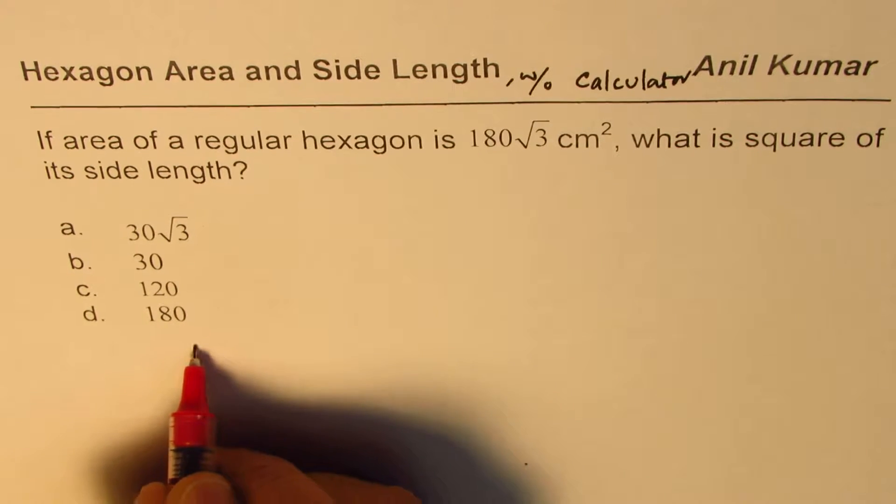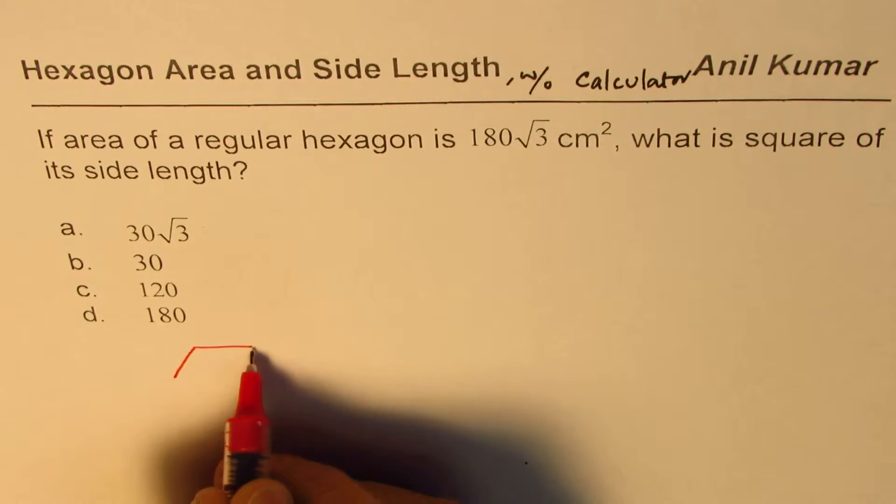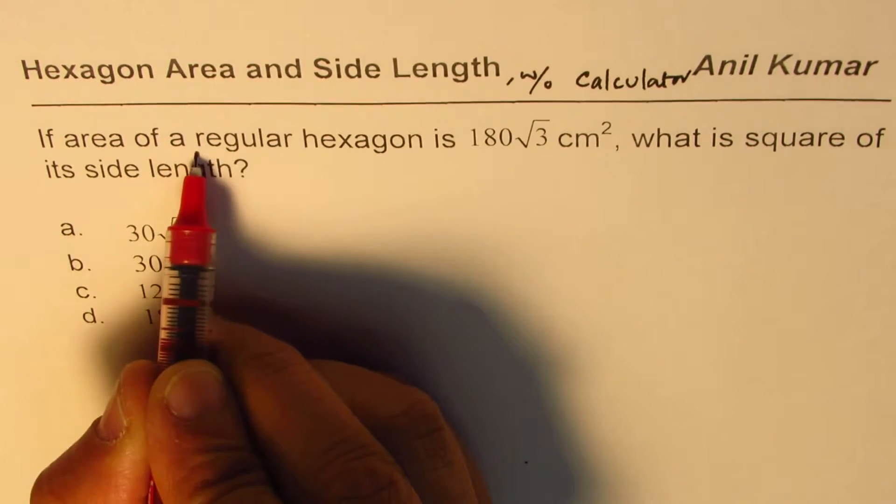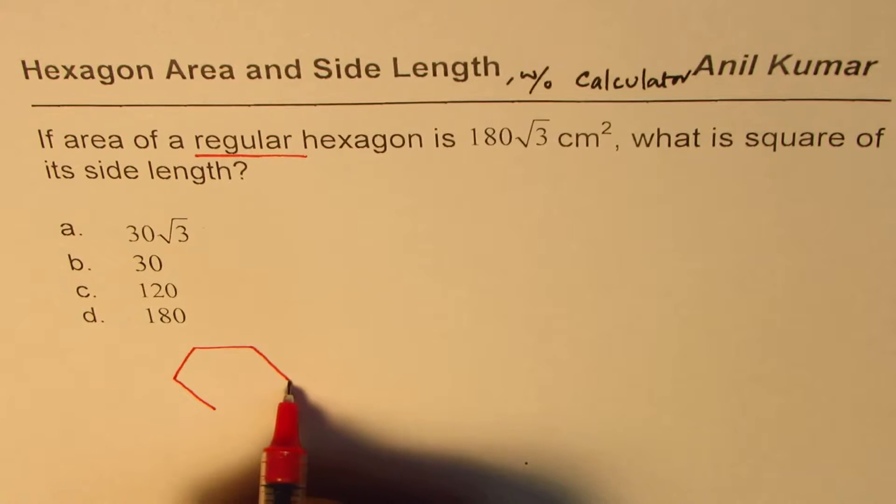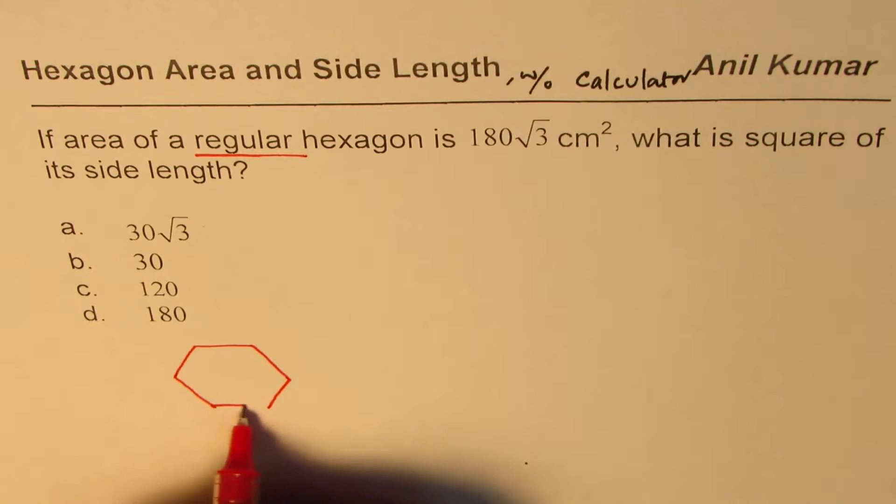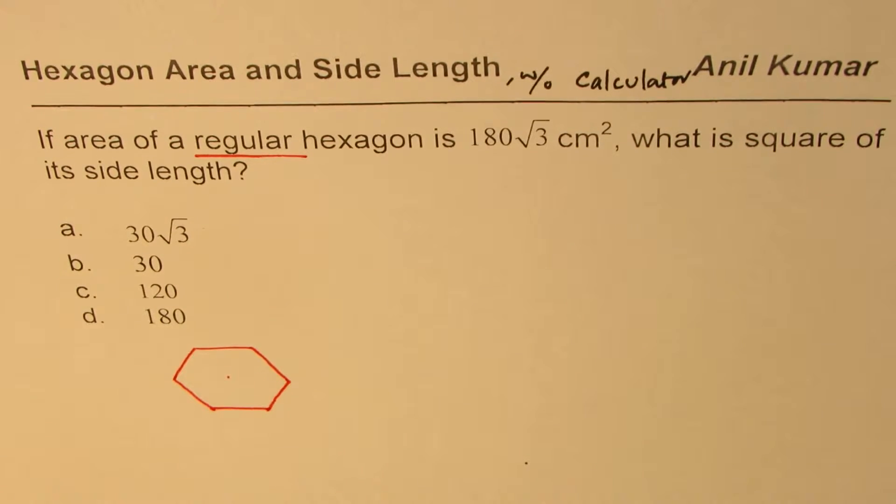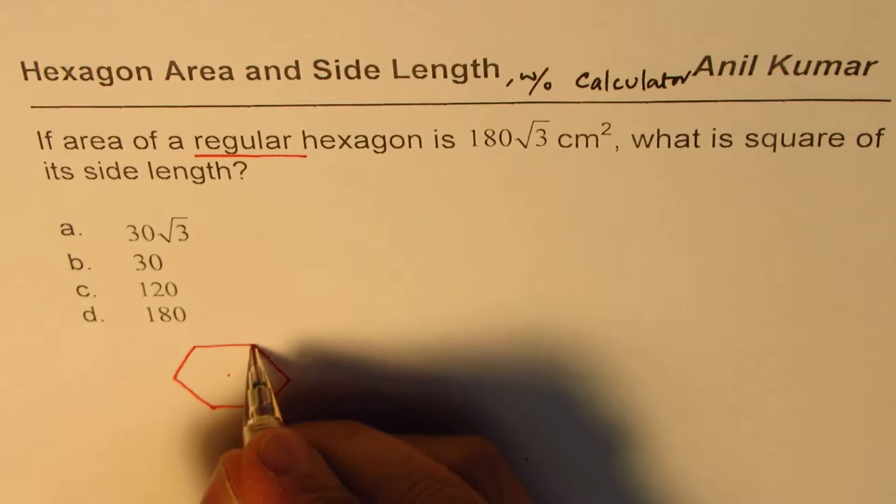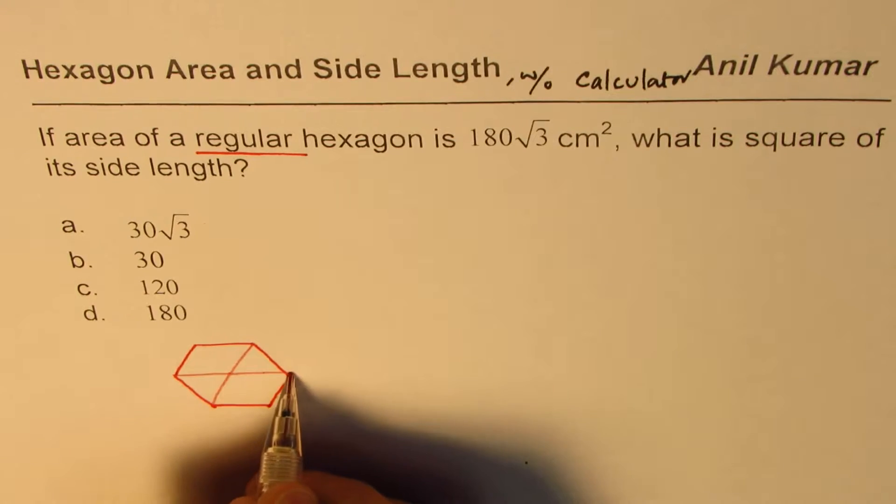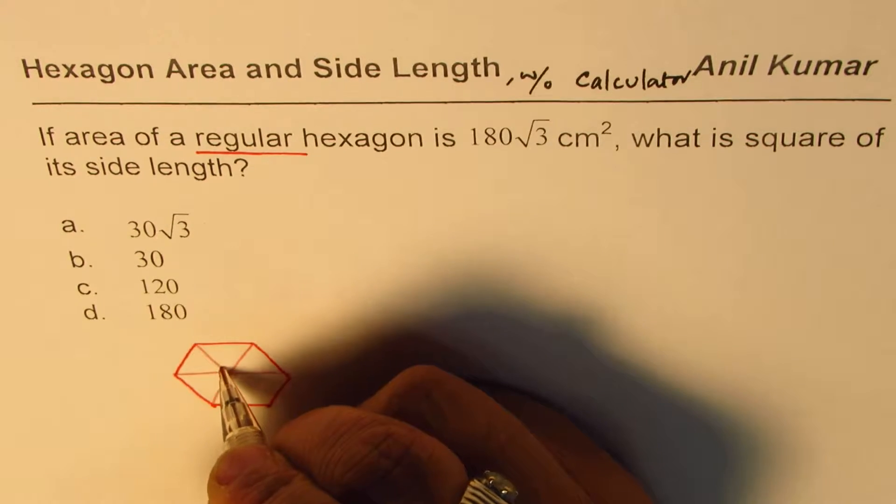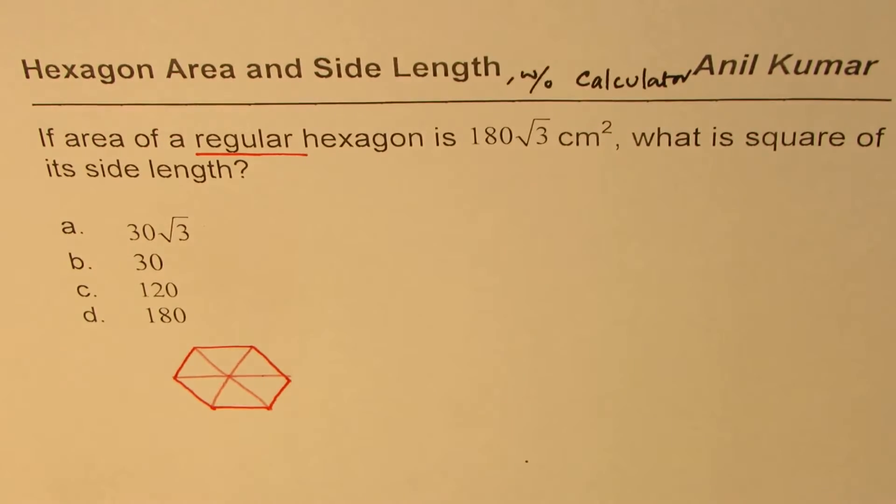A hexagon is a shape which has six sides, and when we say regular it means all six are of equal length. Think of this as a regular hexagon. As you can see, this hexagon can be divided into six equilateral triangles if you just join these corners or vertices.